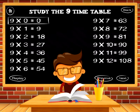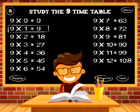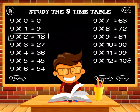9 times 0 equals 0. 9 times 1 equals 9. 9 times 2 equals 18.